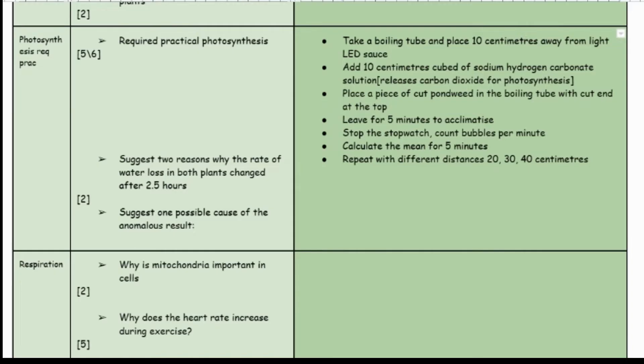You then place a piece of cut pond weed into the boiling tube with the cut end at the top. Leave it for five minutes to acclimatize, then from five minutes onwards start the stopwatch and count the bubbles per minute. Calculate the mean for five minutes and repeat with increasing distances — 20 centimetres, 30 centimetres, 40 centimetres — to see how distance affects the number of carbon dioxide bubbles and hence the rate of photosynthesis.